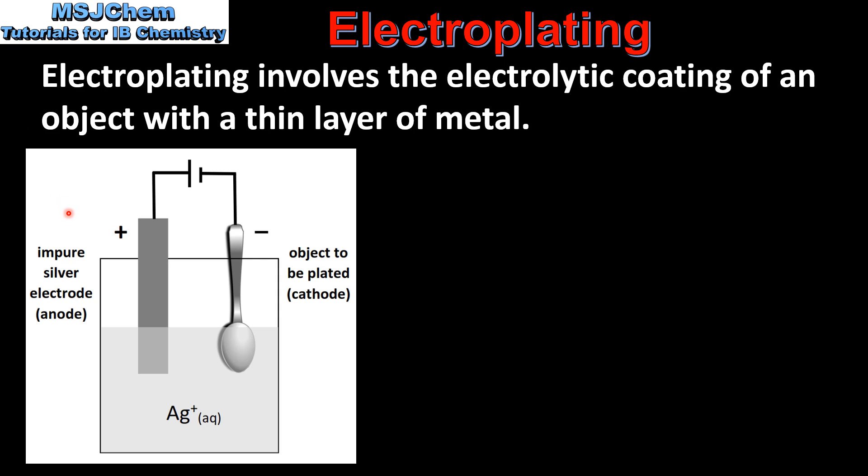Here we have an example of an electrolytic cell that can be used for electroplating. The positive electrode, which is the anode, is made of impure silver, and the negative electrode, which is the cathode, is the object to be plated. The electrolyte contains the ions to be plated, so in this example the steel spoon will be coated with a thin layer of silver.